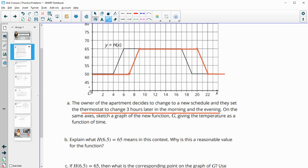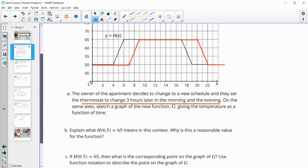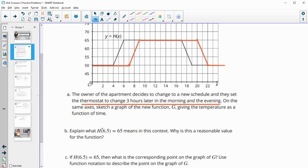And so then part B says, explain what H of 6.5 equals 65 means. So this is on the original setting at 6:30 in the morning.